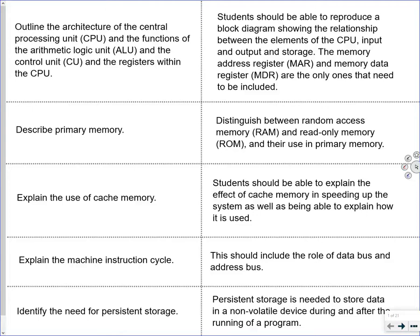The curriculum also requires students to describe primary memory and distinguish between random access memory (RAM) and read-only memory (ROM) and their use in primary memory. Additionally, students should explain the use of cache memory and its effect in speeding up the system, explain the machine instruction cycle including the role of the data bus and the address bus, and identify the need for persistent storage — needed to store data in a non-volatile device during and after running a program.